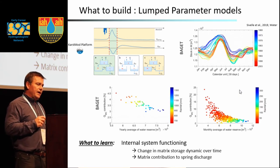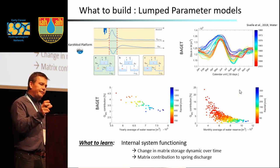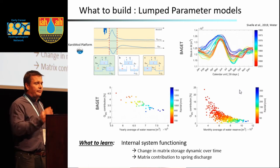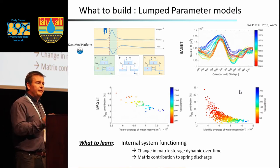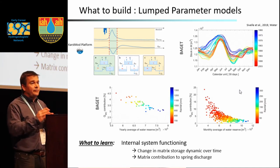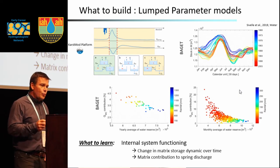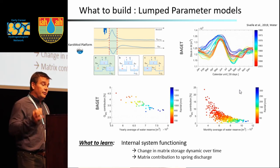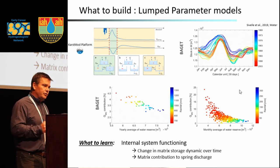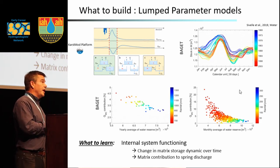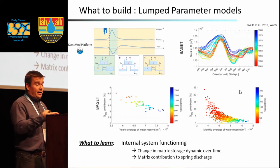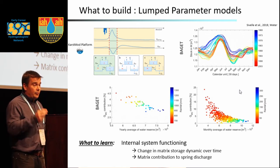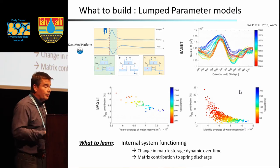When you have a long time series, you can look at how this mechanism changes over time. On the right-hand side you can see the change in matrix storage over more than 30 years. In the 1960s, most of the recharge of the capacitive compartment occurred in February and May, and progressively it shifted to later in the year. Regarding the contribution of the capacitive compartment as a function of rainfall intensity, the lower the precipitation, the higher the contribution, with more variability at the monthly timescale.